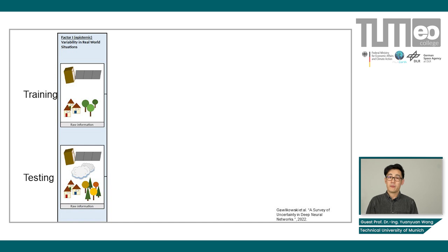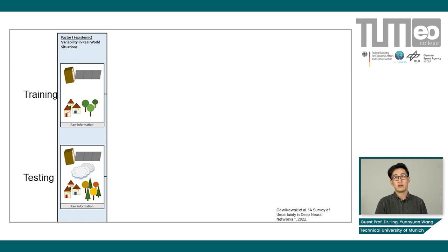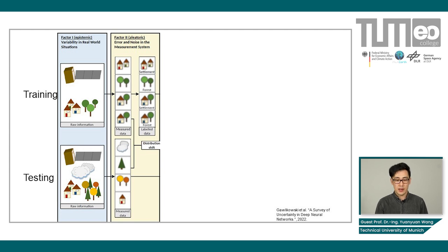In the training stage, we usually collect images in a cloud-free condition at a certain timestamp. However, in the testing stage, the weather may be different — there might be clouds and objects on the ground may have changed. This creates a distributional shift from testing data to training data, which is part of the epistemic uncertainty. When we collect training or test data, those data will contain noise. This is the so-called aleatoric uncertainty, shown as blurry images here.